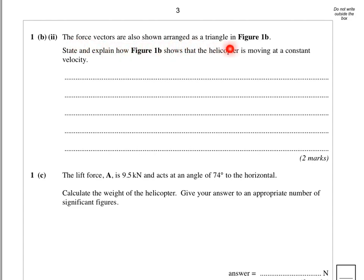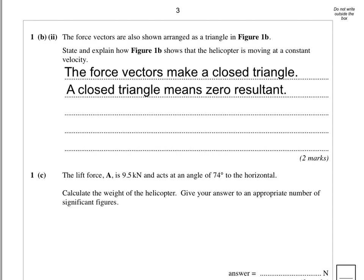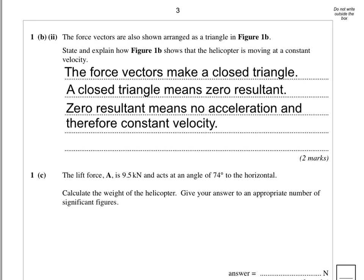The force vectors are also arranged as a triangle in figure 1B. State and explain how the diagram shows that the helicopter is moving at a constant velocity. Well, the first thing is that the force vectors make a closed triangle. So it hasn't said in the question closed, so it's worth probably putting that in. And if that's the case, a closed triangle means zero resultant. And if there's no resultant, then there can be no acceleration. And if there's no acceleration, we must be moving at constant velocity. So nice two marks there.